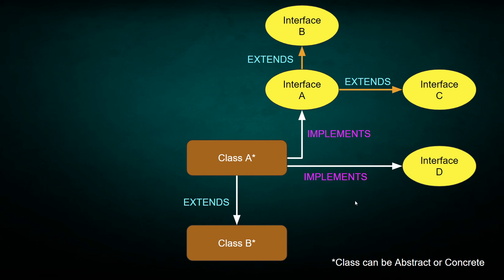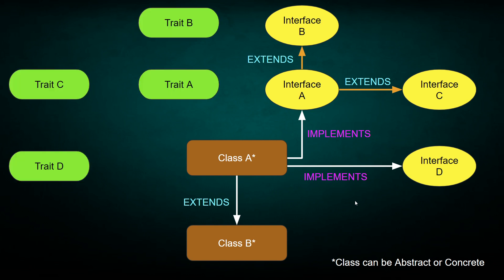And then we have the traits. There are four of them as well, kind of similar to interfaces. Traits can only use other traits — they cannot extend an interface or extend or use a class — just like an interface can extend other interfaces. Or they don't have to use anything at all. The relationship between a class and traits is similar to interfaces: the class can use as many traits as it wants.